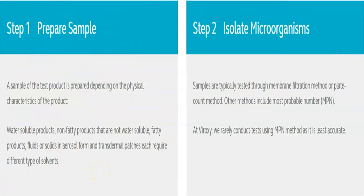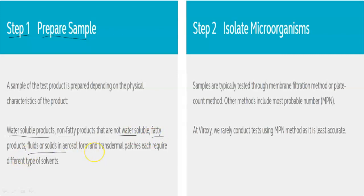This is the procedure of how the BioBurden test is performed, explained in brief — in the next video we will see detail about the aim, procedure, requirements, and results. The first step for the BioBurden test is preparation of the sample. The sample of the test product is prepared according to the physical characteristics of the product. Generally, water-soluble products, non-fatty products, fatty products, fluids or solids in aerosol, or transdermal patches each require different types of solvents.